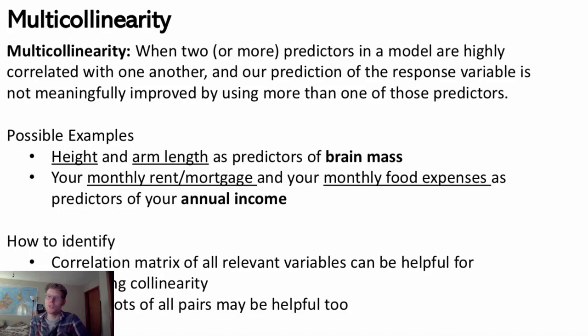As an example, maybe I have height and arm length as two separate predictors to predict someone's brain mass. Height and arm length are highly correlated — knowing one gives a very good estimate of the other. So if I'm using both to predict brain mass, it's probably redundant because I'm not getting a whole lot of extra information from the second if I already have the first.